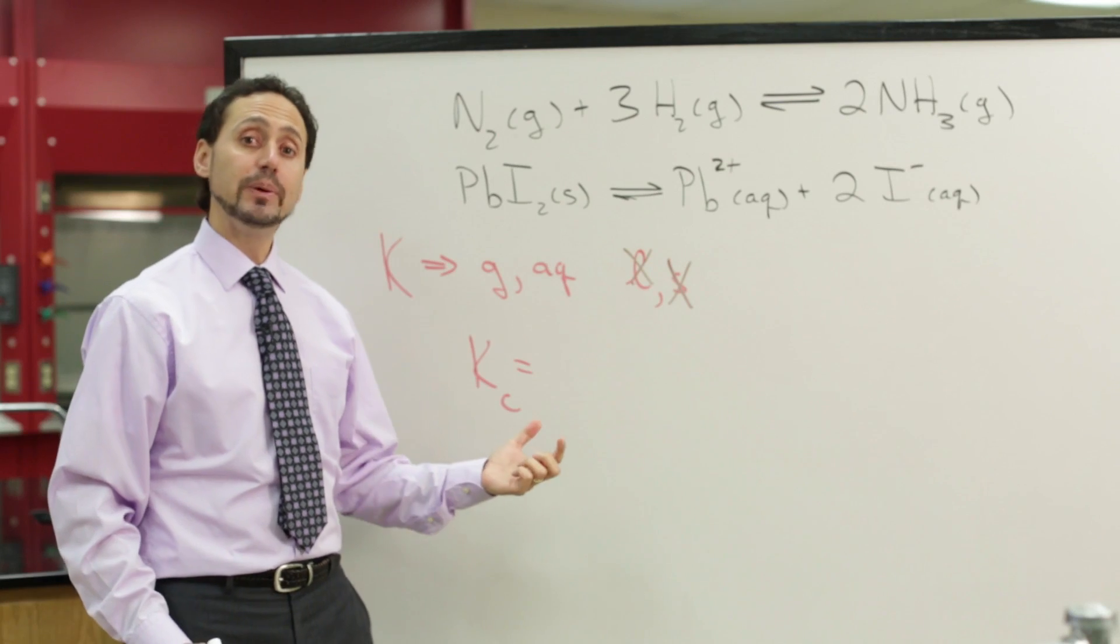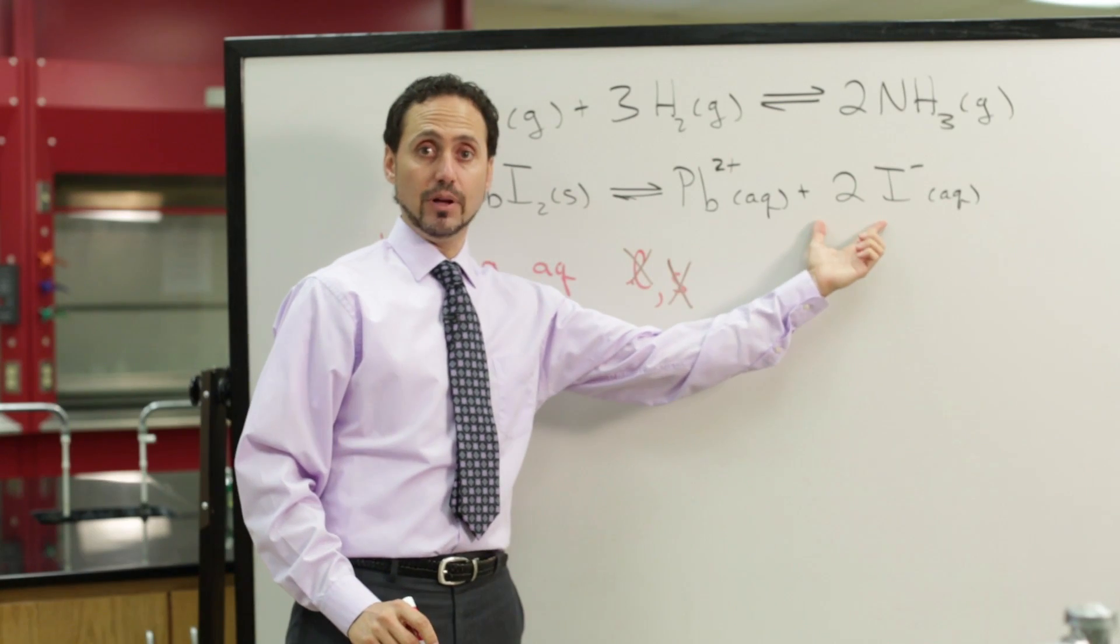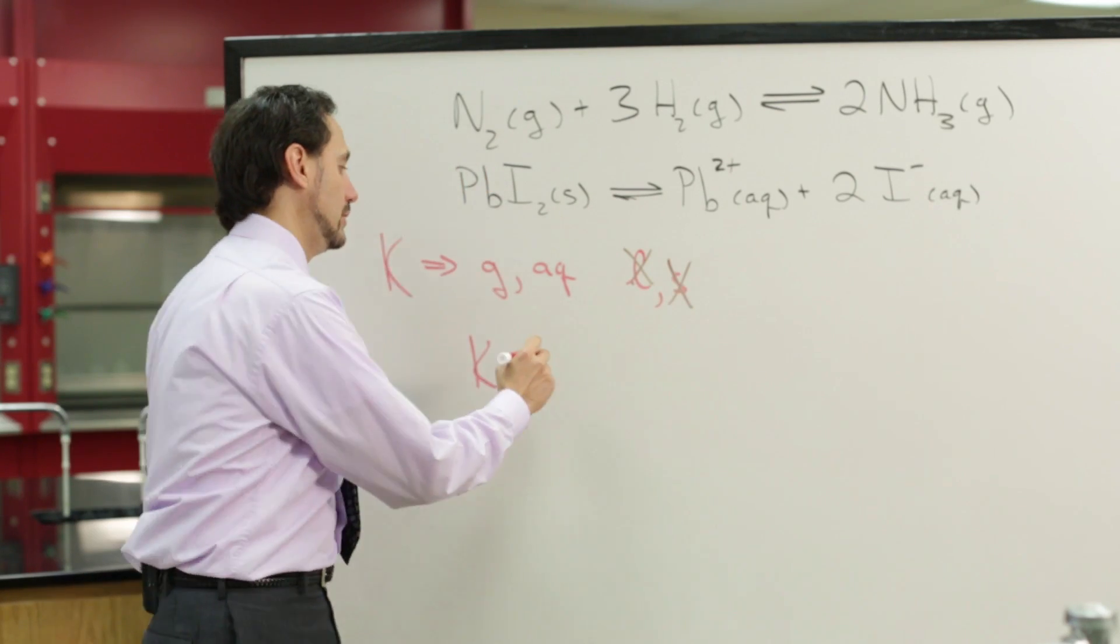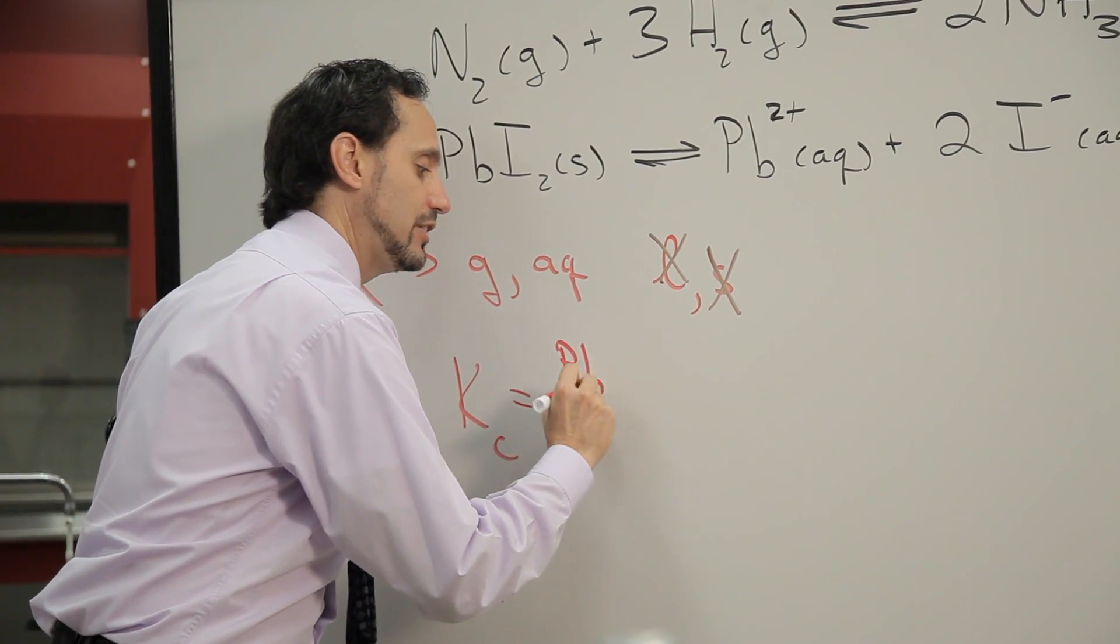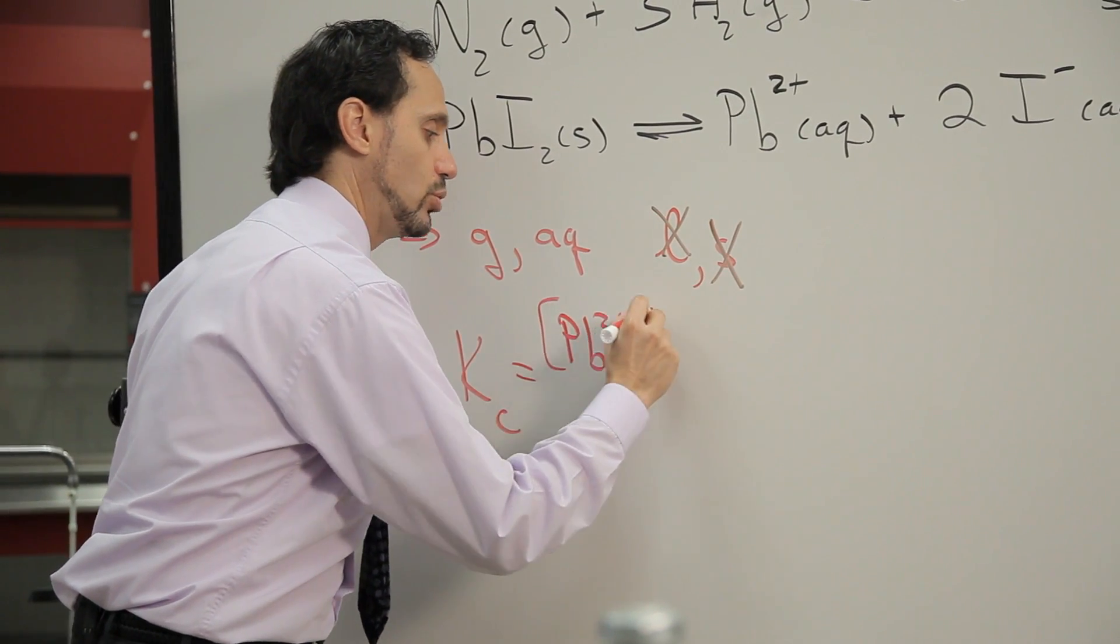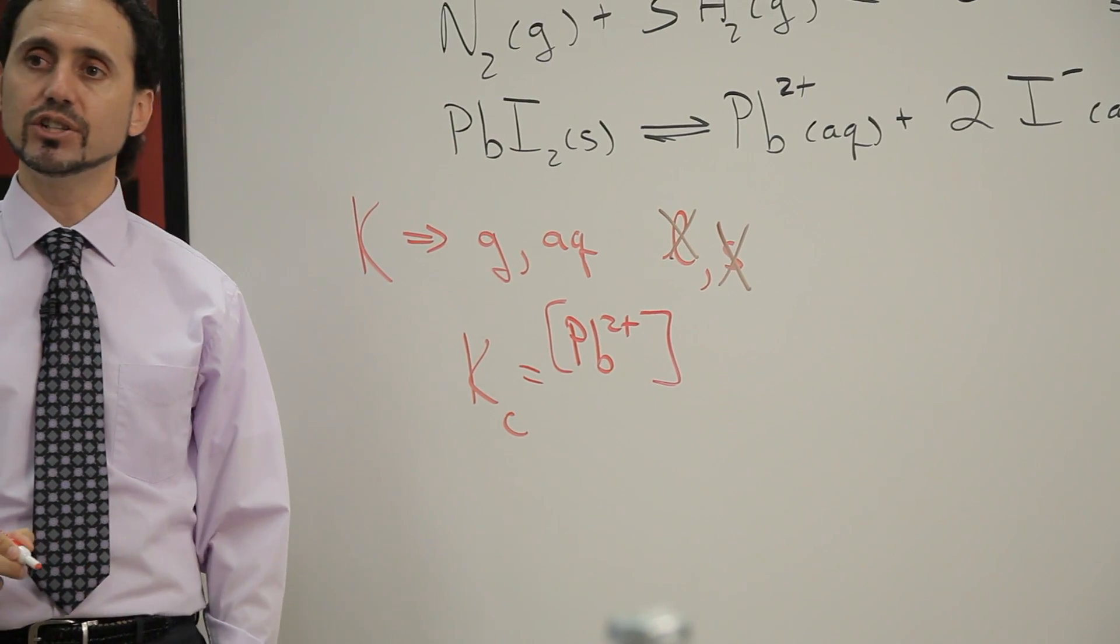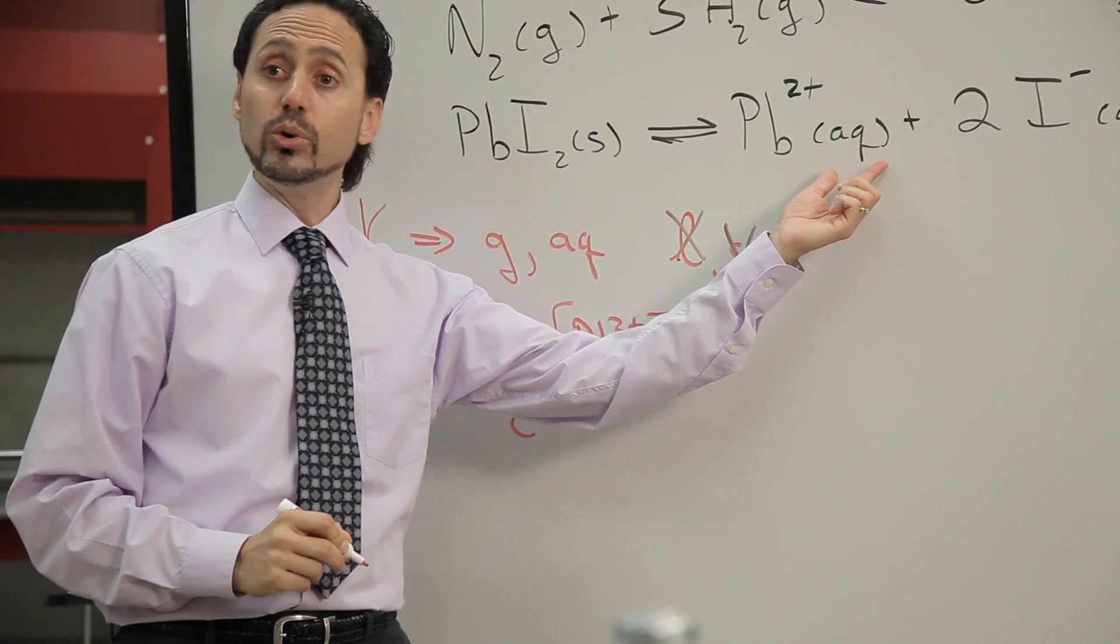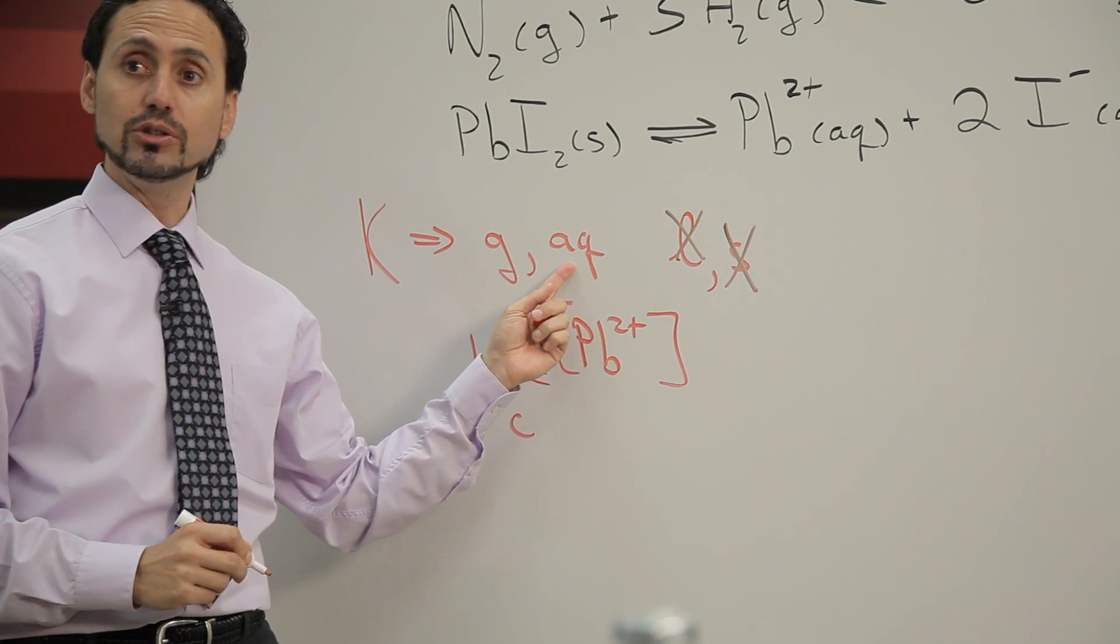So we always begin with the products on top, so we have the lead 2 plus ion in square brackets for molar concentration. Again, it's in the aqueous phase, so it's okay to include that.